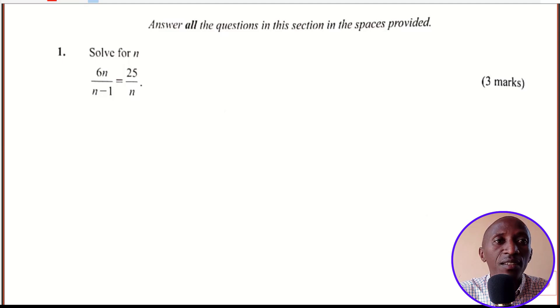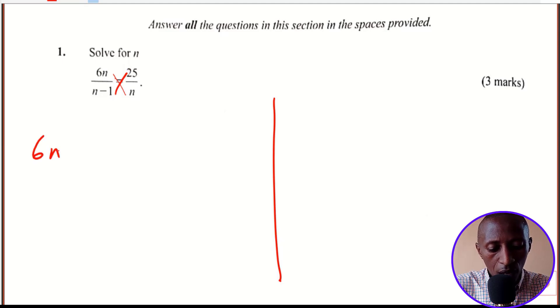How do we go about this kind of question? Always learners, let us take care of our space. You divide your space into two so that you have ample space to show your working. The first step is cross multiplication. We cross multiply such that we get 6n multiplied by n giving you 25 multiplied by n minus 1.